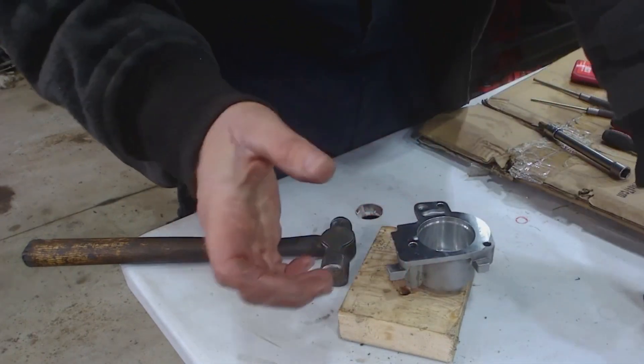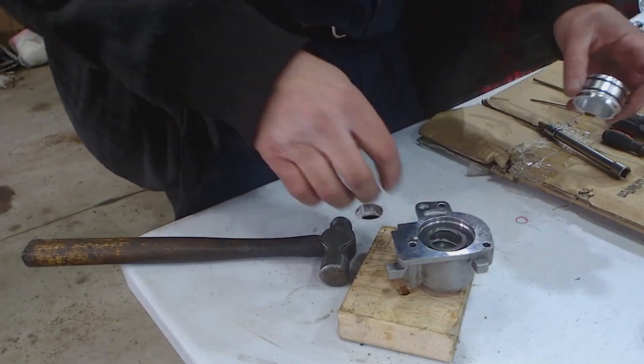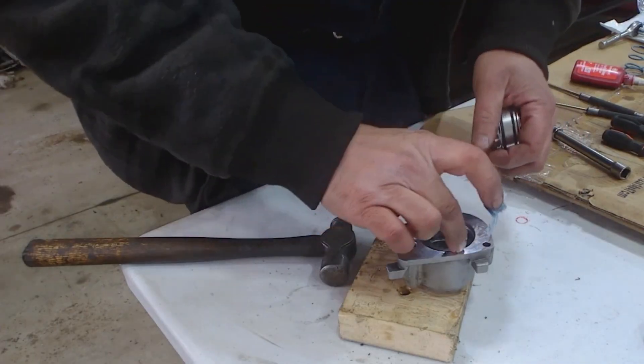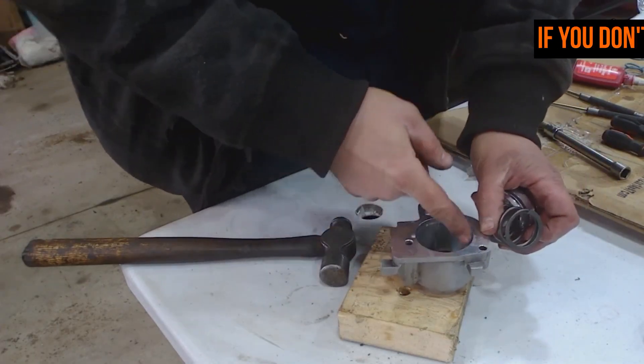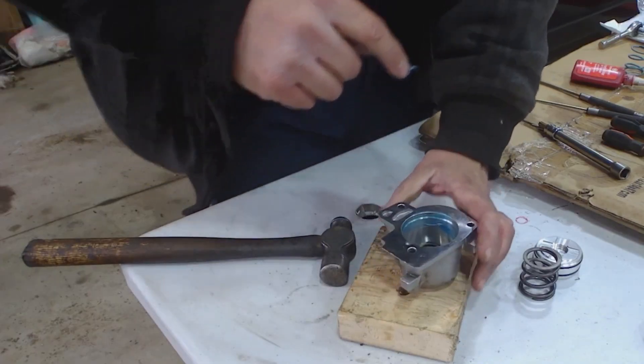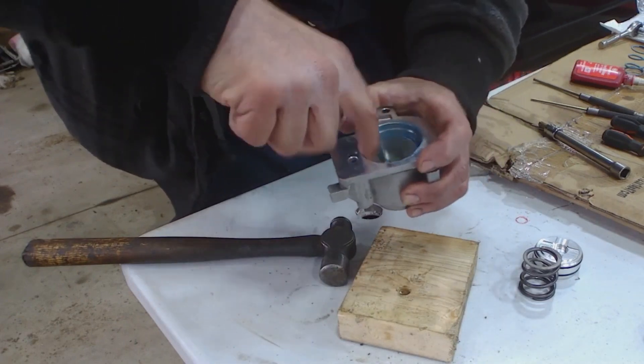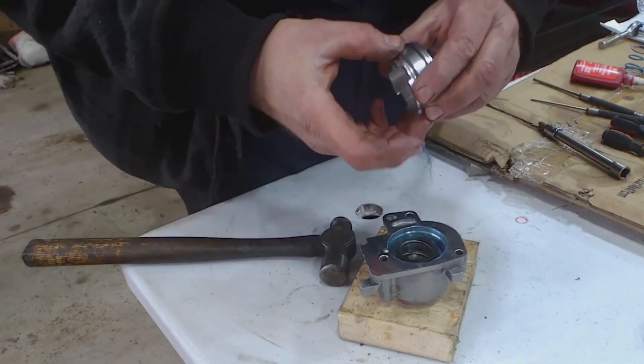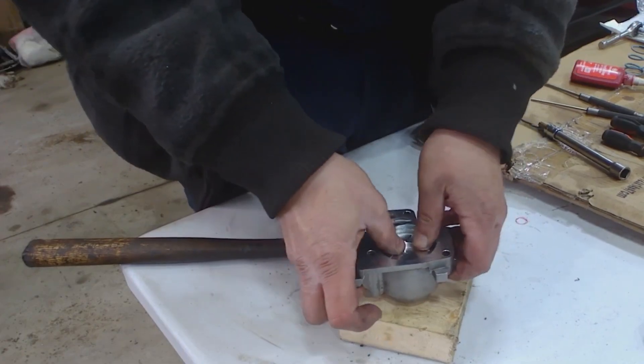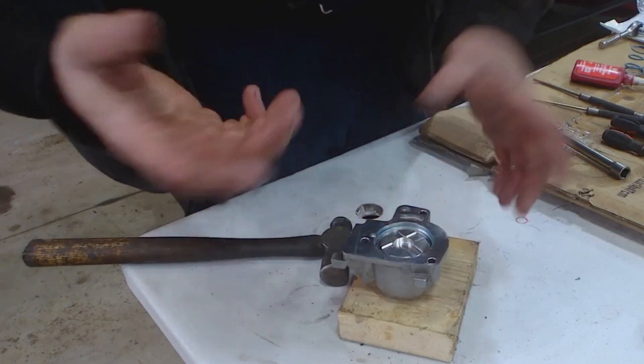And now we can put it back together. Again, based on your year and application, it might make you put it in a different order. Mine, being a more modern version, goes with the dome side of the piston upward. A little bit of assembly goop will make my job easier. And it should spring back and forth. So that's it for my one, two.